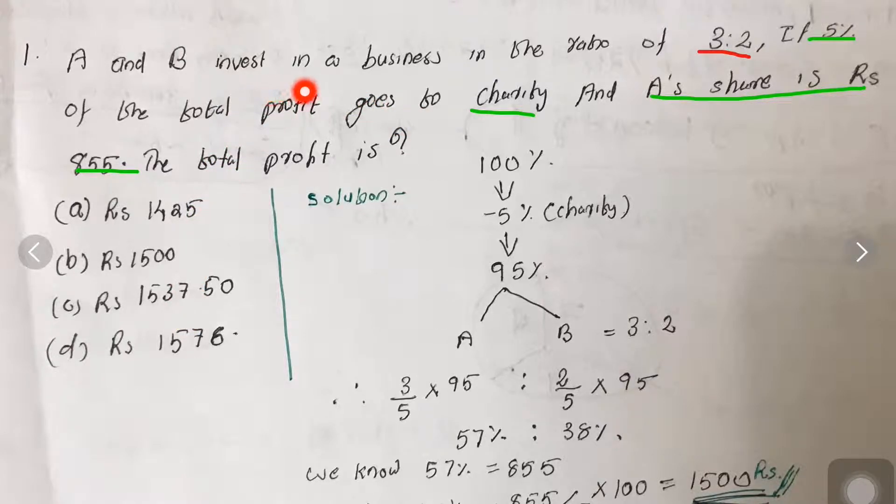So there is an investment done by A and B in the ratio of 3:2, 5% of total profit goes to charity, and A's share is Rs.855. We have to find the total profit. Let us see the solution.